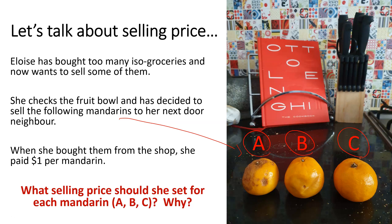You might want to pause and think about what you would set based on the information you've got. So we've got the original purchase price and also we've got the photograph of what those mandarins are looking like. Think about why you set that selling price that you did.